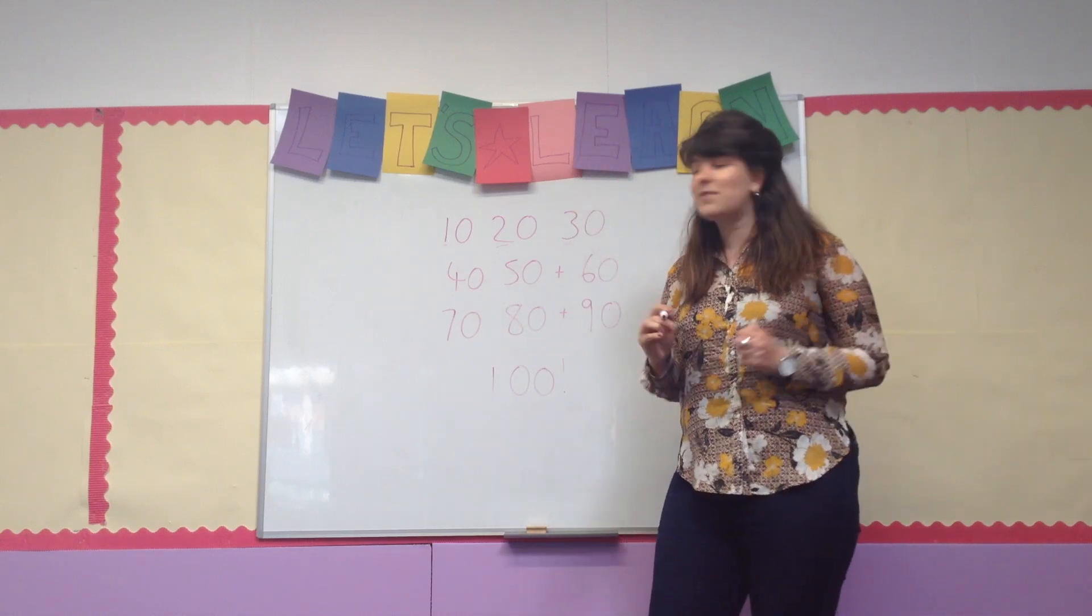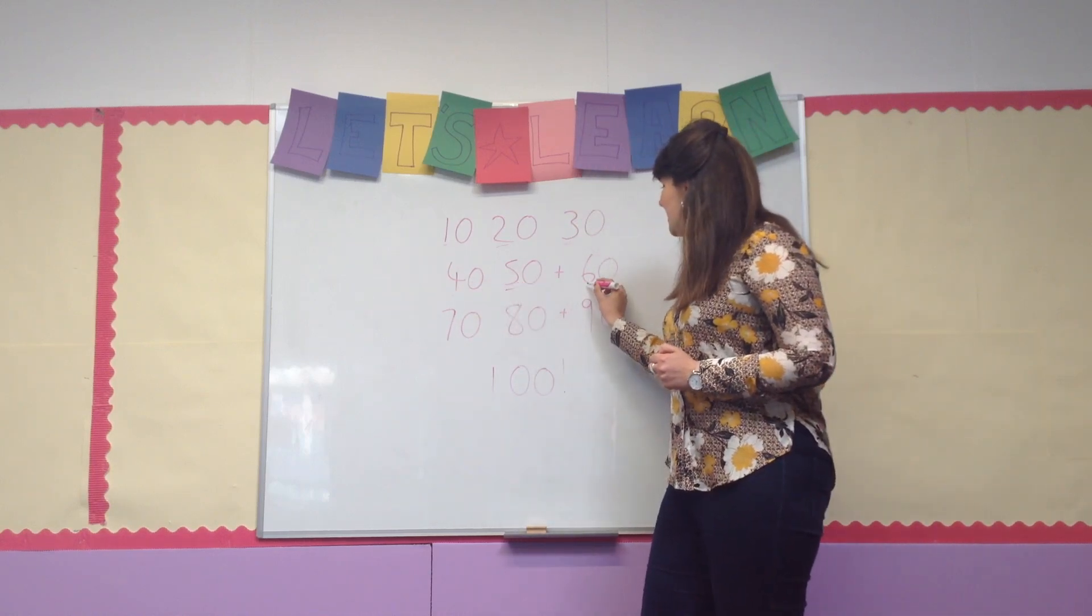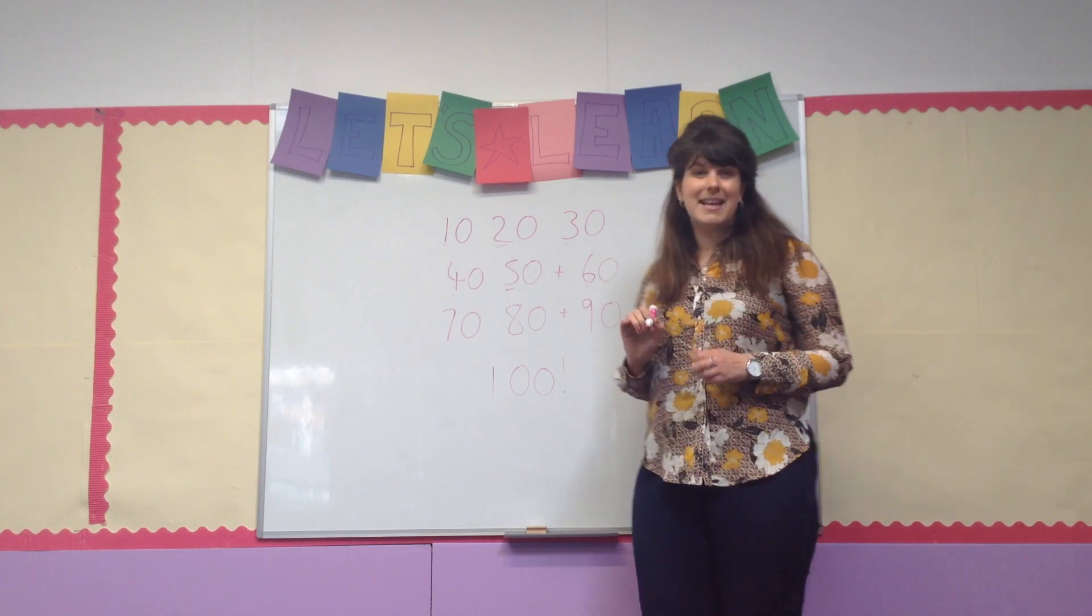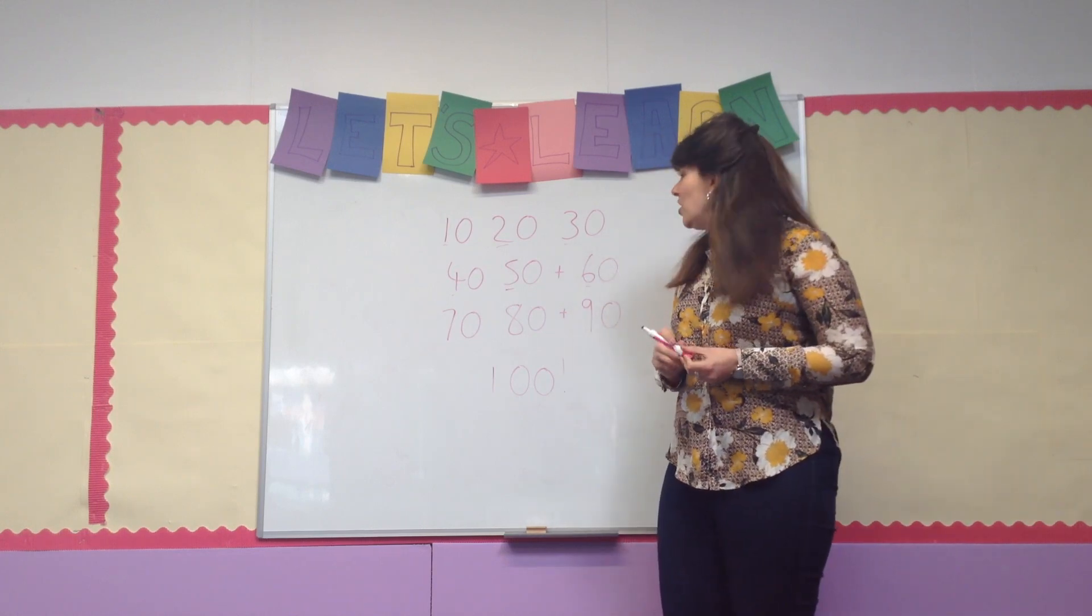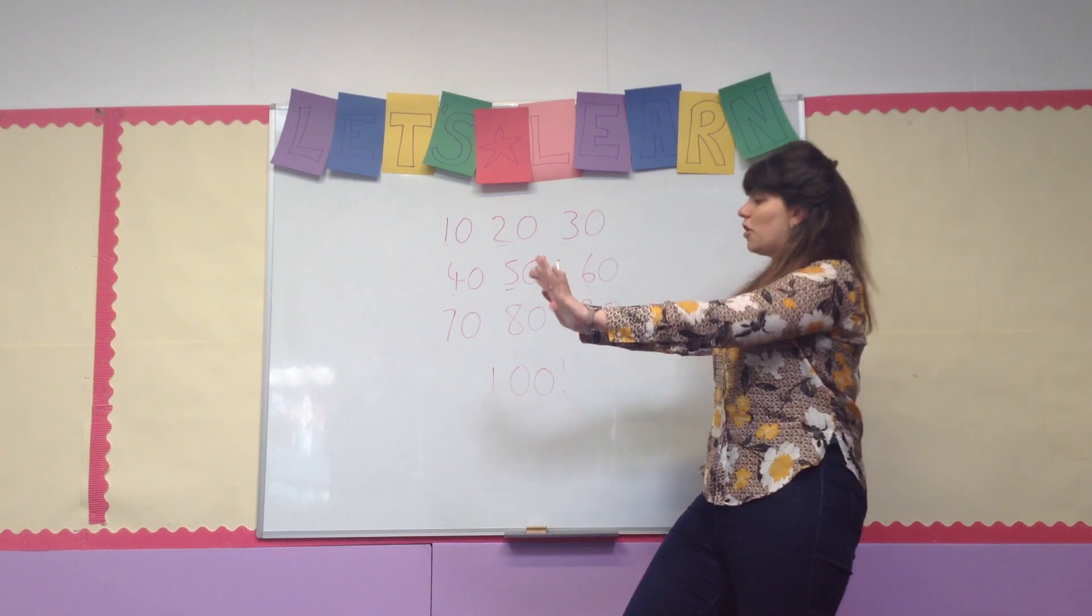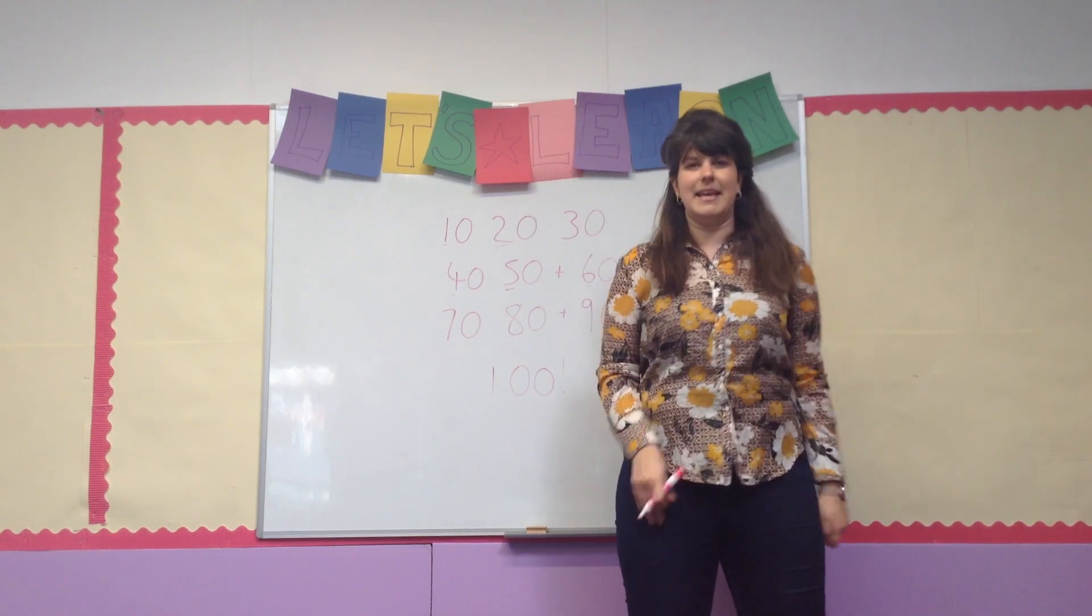4 times 10 makes 40. 5 times 10 is 50. 6 times 10 is 60. All you're doing, you're shifting the digits across, give it a good shove across and you're dropping in your zero.